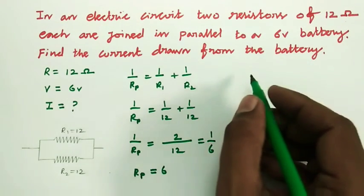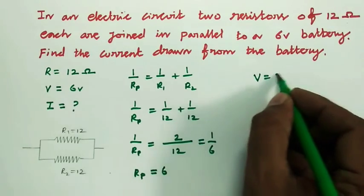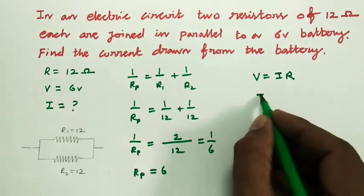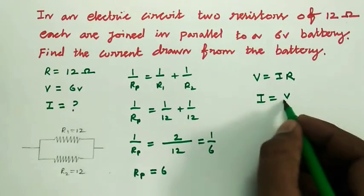Now we are using the Ohm's law. V is equal to I R. I is equal to V by R.